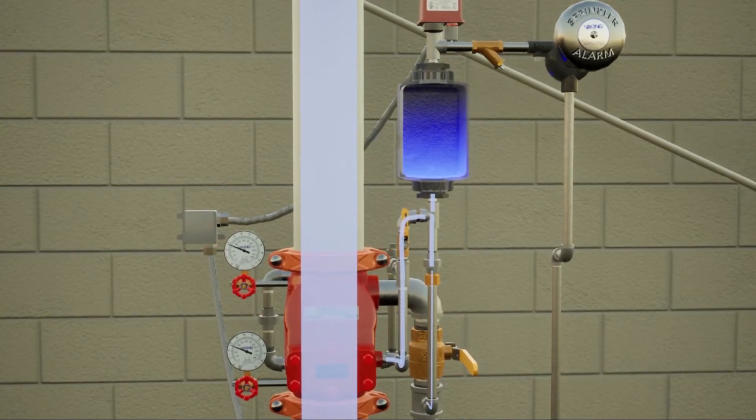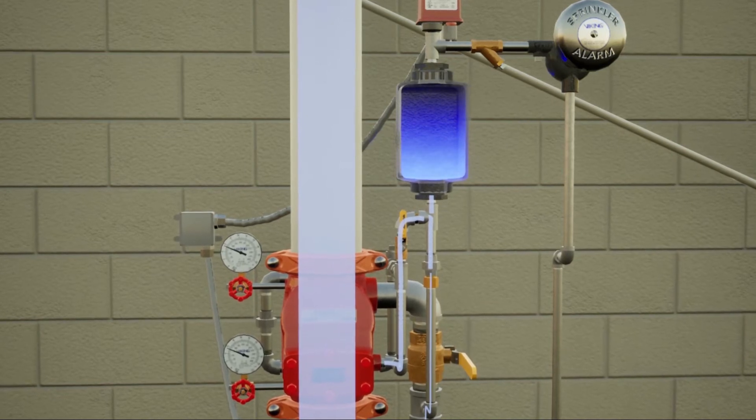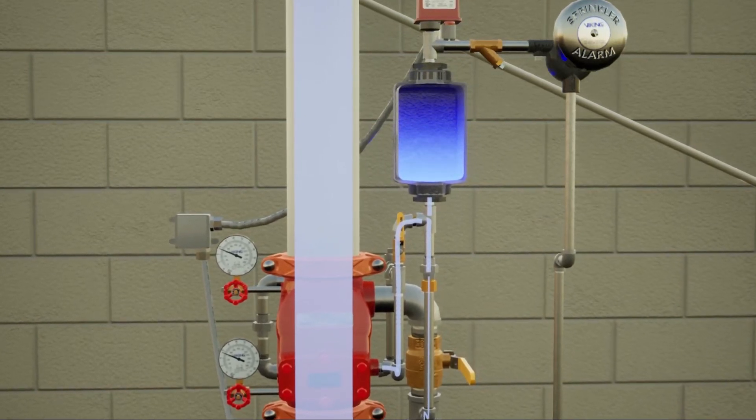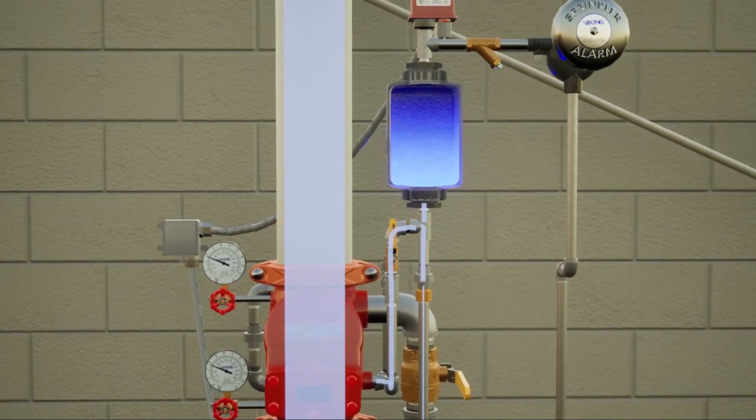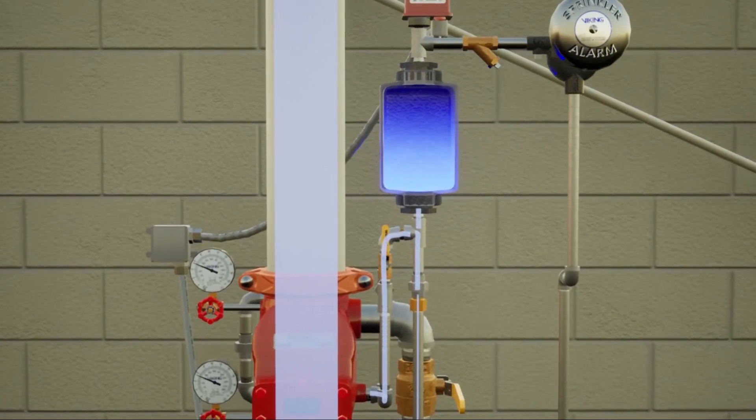The retard chamber is a device that prevents false trips by containing up to a gallon of water flow prior to creating an alarm. Inadvertent water flow will only be able to fill a portion of the retard chamber's capacity.